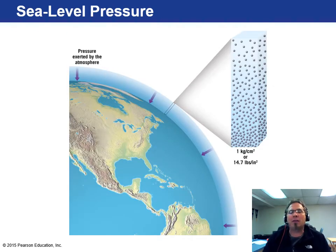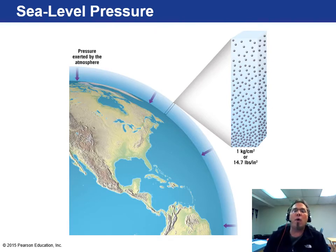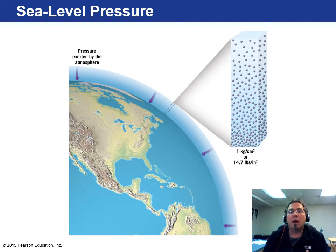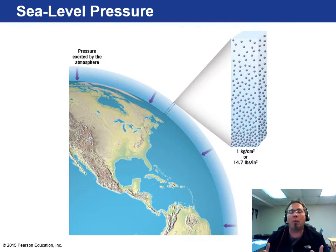Imagine a column of air: at the surface of the Earth you have much more air — 14.7 pounds per square inch — but as you go way up in altitude, you get fewer and fewer air molecules and less pressure. That's why astronauts have to wear pressurized suits. Out in space there's no air pressure, and without it their internal organs would essentially boil. The suits exert pressure on their bodies to simulate Earth's surface pressure.